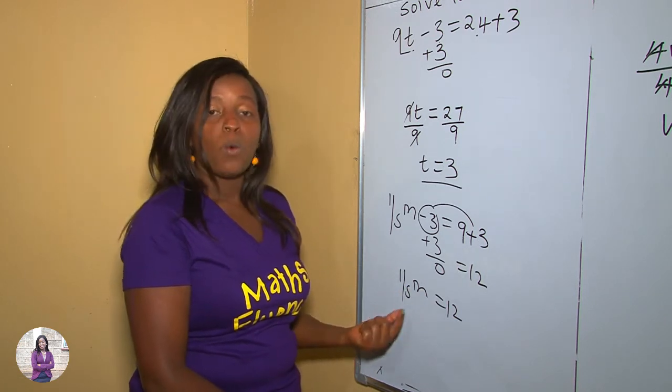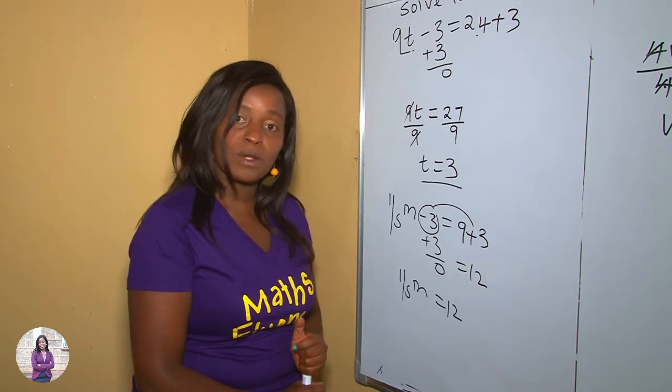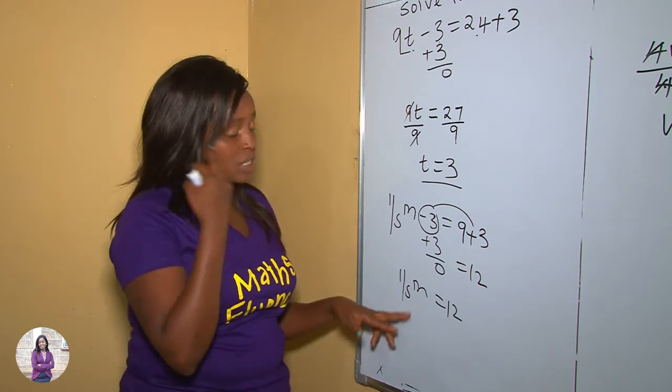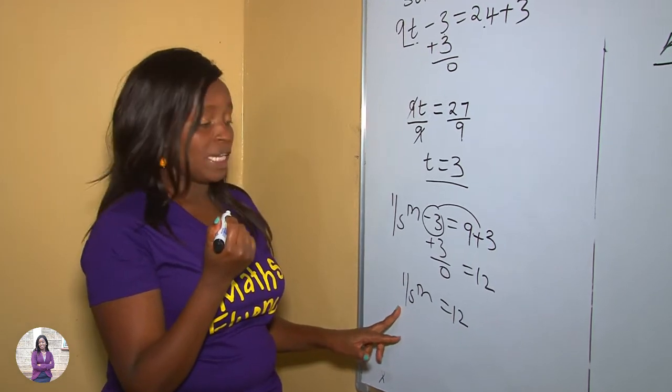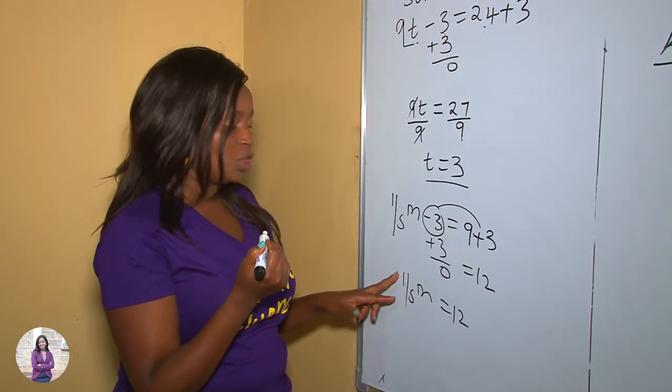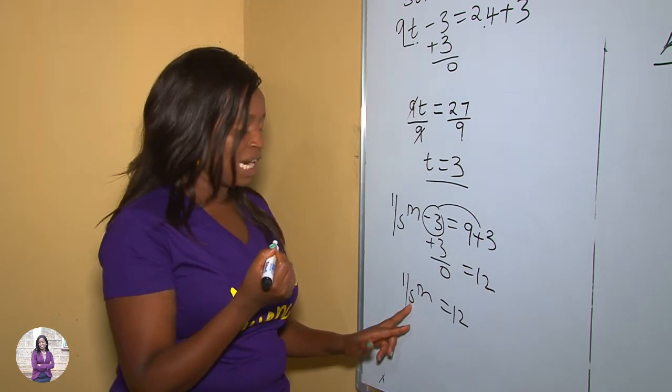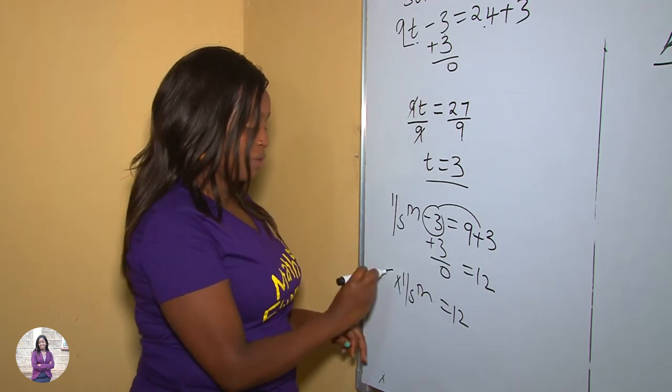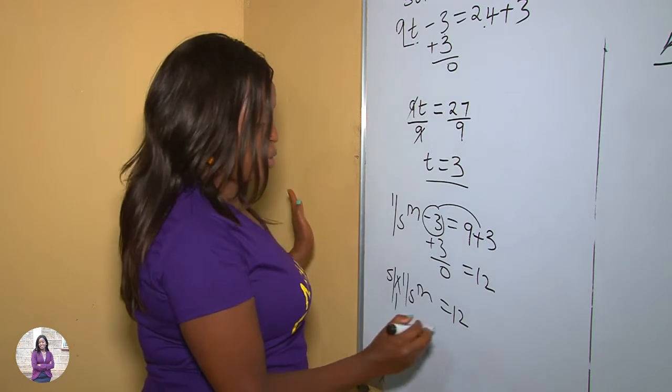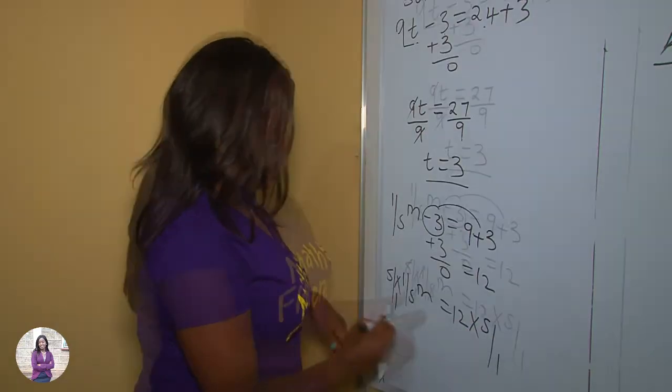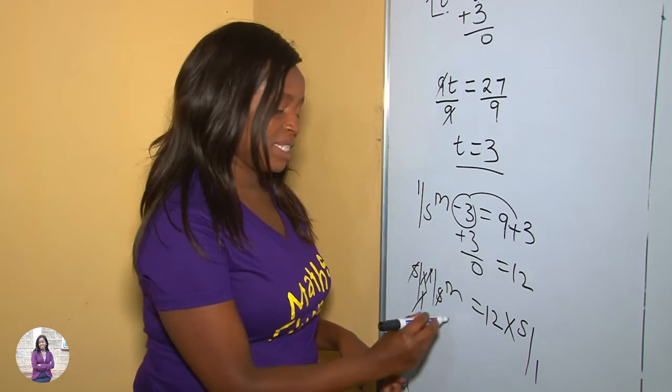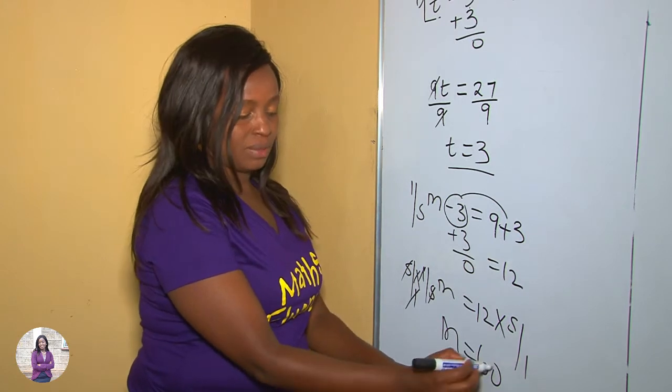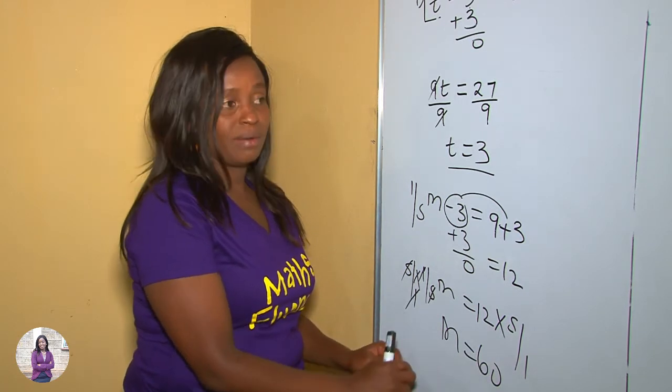To do away this fraction, we multiply by the reciprocal of that fraction on both sides. In our previous lesson we had learned about reciprocal. Reciprocal of a fraction is we are switching the numerator to become the denominator and the denominator to become the numerator. So we multiply both sides by the reciprocal of our fifth, which is five over one. Whatever you have done on this side, you also do on the other side, times five over one. Therefore one times m is m, and 12 times five is 60. And now the value of m is 60.